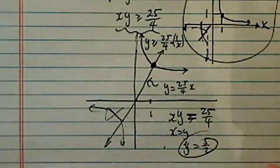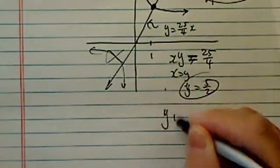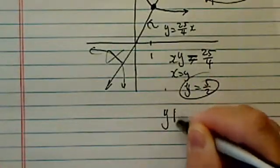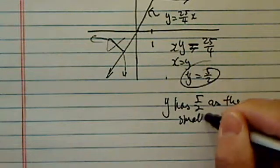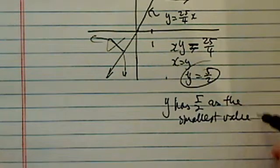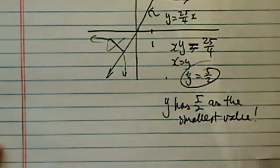So 5 over 2 is the least. Y has 5 over 2 as the smallest value. All right. Hope this helps, and have a confident day.